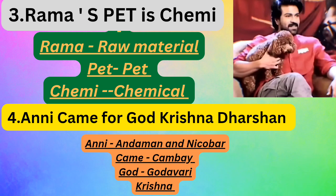The next shortcut is: 'Anni came for God Krishna darshan.' Here, 'Anni' refers to Andaman and Nicobar, 'came' refers to Cambay, 'God' refers to Godavari, and 'Krishna' refers to Krishna. These are the important areas that have large reserves of natural gas.